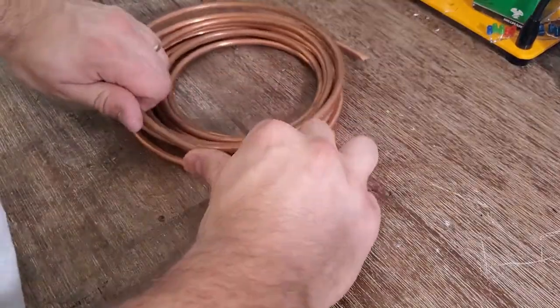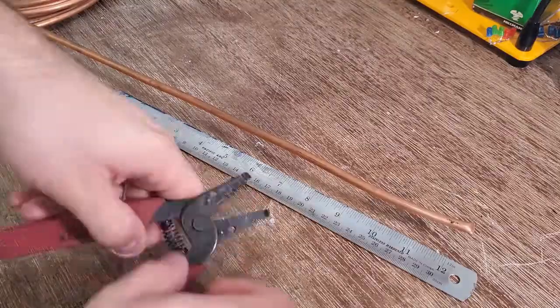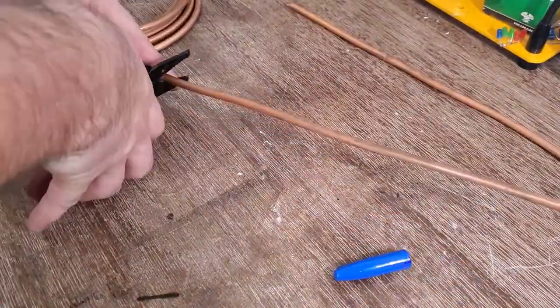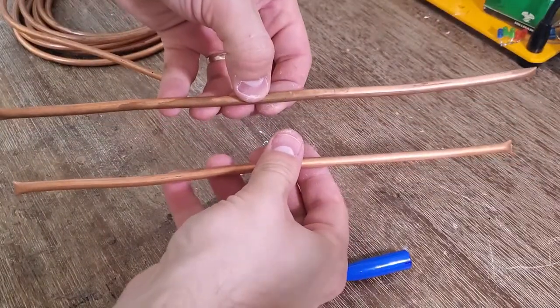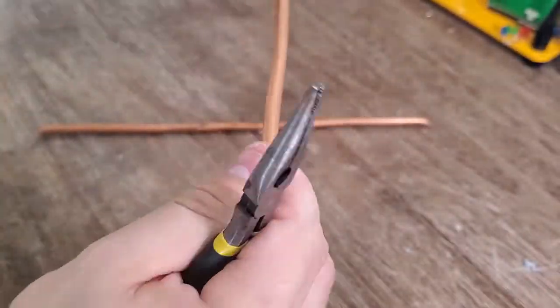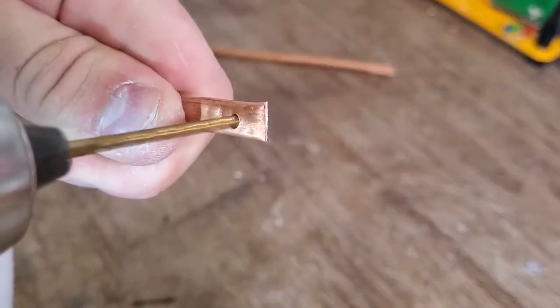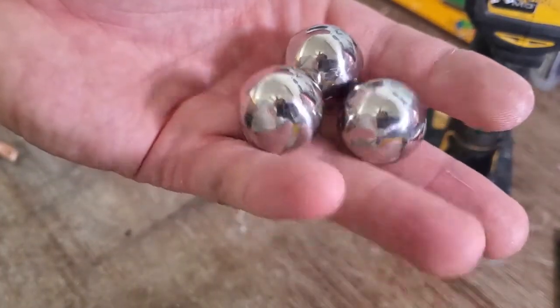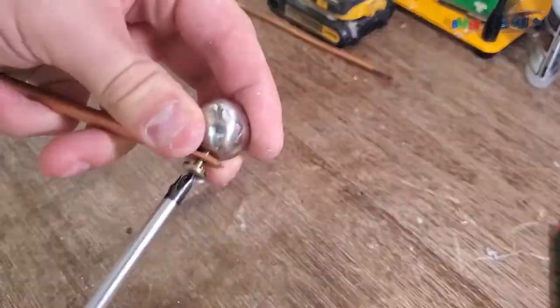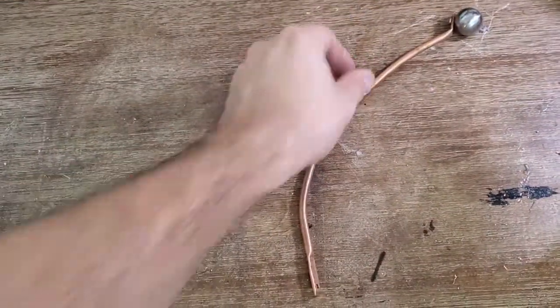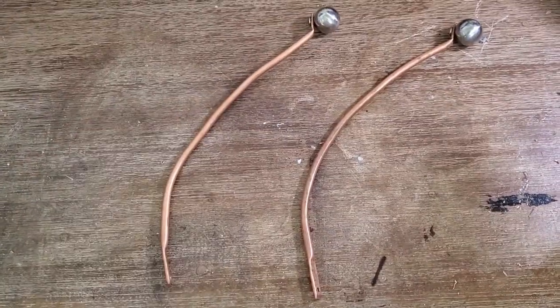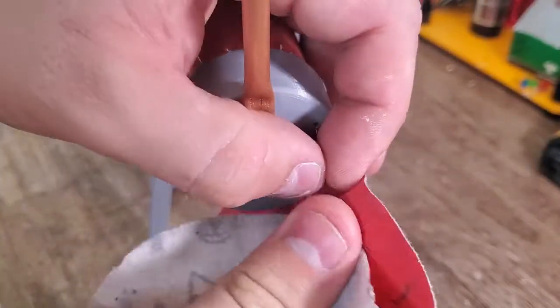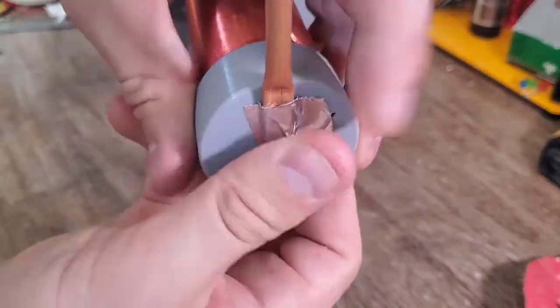Next, I'm going to use some quarter inch copper tubing to form the arms for the coil electrodes. A little bit of aluminum tape will help ensure there's good contact with the electrode arm.